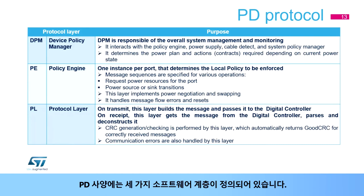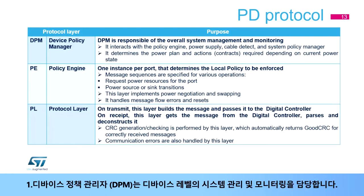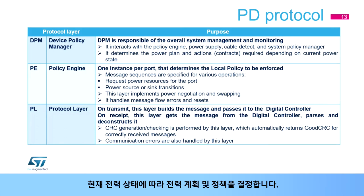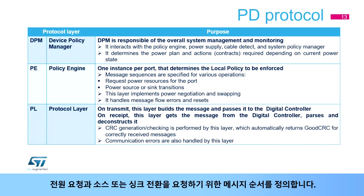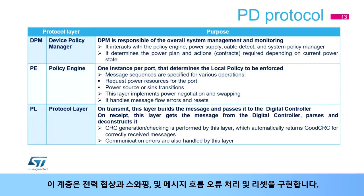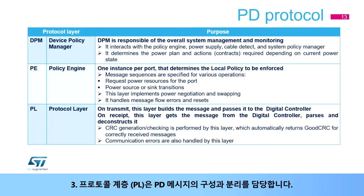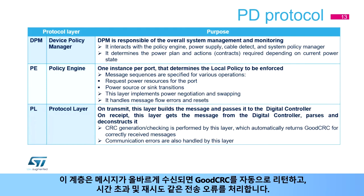Three software layers are defined in the PD specification. Layer 1 is the device policy manager (DPM), in charge of device-level system management and monitoring; it determines the power plan and contracts depending on current power state. Layer 2 is the policy engine (PE), which controls a single UCPD port; message sequences are defined to request power resources and perform source or sink transitions — this layer implements power negotiation, swapping, and handles message flow errors and reset. Layer 3 is the protocol layer (PL), in charge of constructing and deconstructing PD messages; it automatically returns good CRC when a message is correctly received, and also handles transmission errors such as timeout and retries.